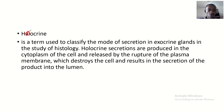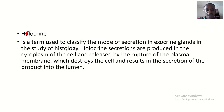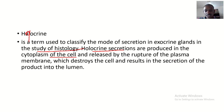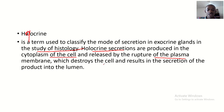Now we have the holocrine glands. Holocrine is a term used to classify the mode of secretion in exocrine glands in the study of histology. Holocrine secretions are produced in the cytoplasm of the cell and are released by the rupture of the plasma membrane, which destroys the cell.